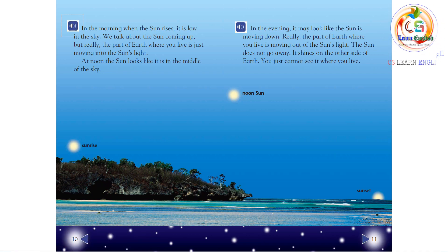At noon, the Sun looks like it is in the middle of the sky. In the evening, it may look like the Sun is moving down. Really, the part of Earth where you live is moving out of the Sun's light. The Sun does not go away. It shines on the other side of Earth. You just cannot see it where you live.